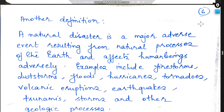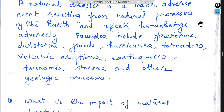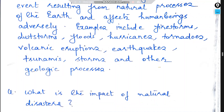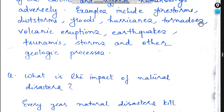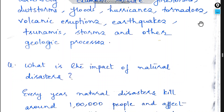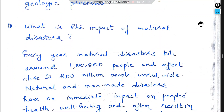Another definition: a natural disaster is a major adverse event resulting from natural processes of the earth that affects human beings adversely. Examples include firestorms, dust storms, floods, hurricanes, tornadoes, volcanic eruptions, earthquakes, tsunamis, storms, and other geological processes.